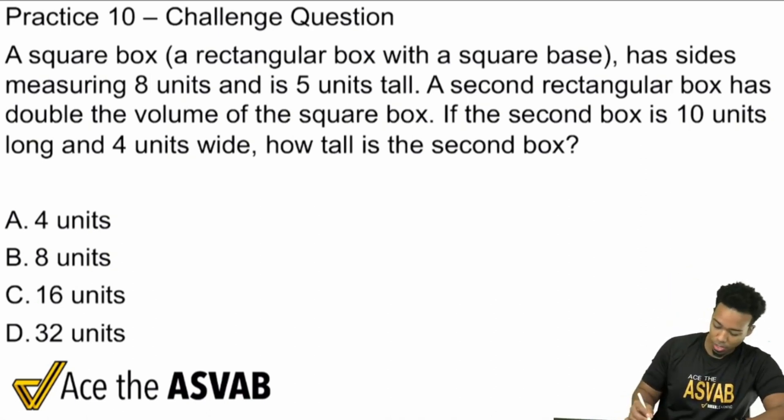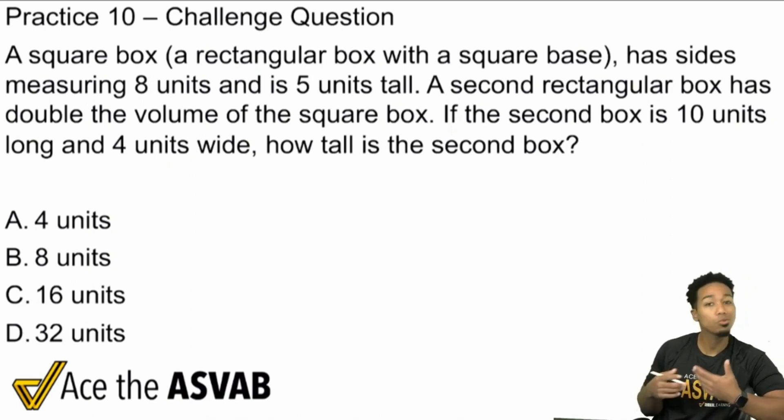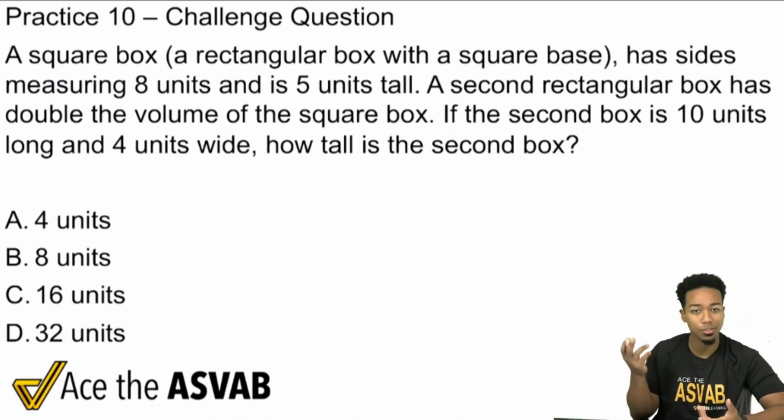So the question starts right here: How tall is the second box? Now, of course, if you see the word if, remember that it's going to be related information that you're going to need to pay attention to, but the question itself always starts with who, what, when, where, why, how, how many, which are the following. That's what it always starts with, those action words.